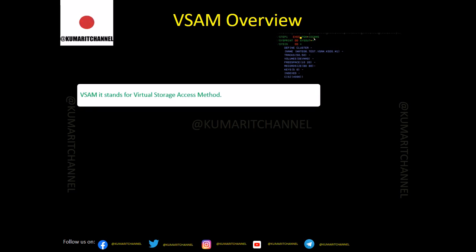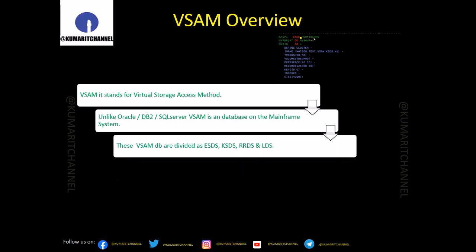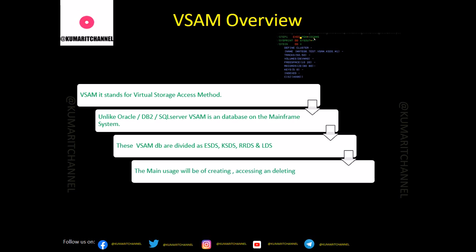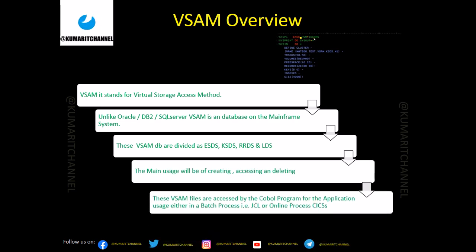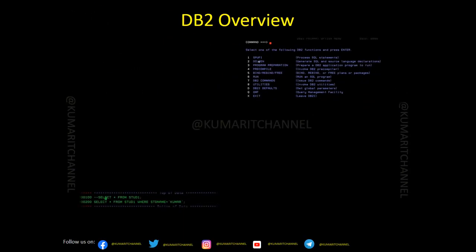VSAM stands for Virtual Storage Access Method. Similar to databases like Oracle, SQL Server, or MySQL, VSAM is where data is stored on the mainframe. VSAM datasets are divided into four types: KSDS, ESDS, RRDS, and LDS. The main operations are creating, accessing, and deleting VSAM files. VSAM files can be accessed by COBOL programs, JCLs, online CICS programs, and other languages such as PL/I, C, and REXX.